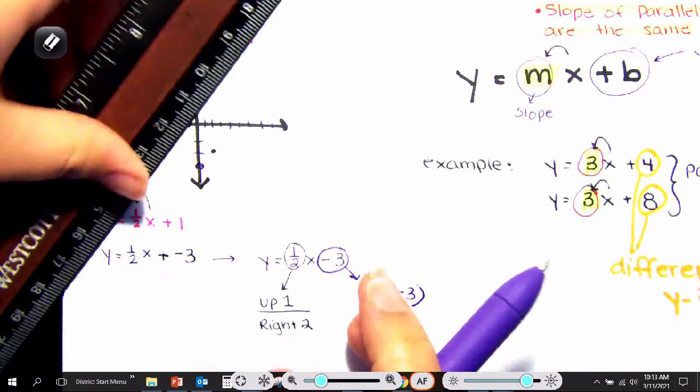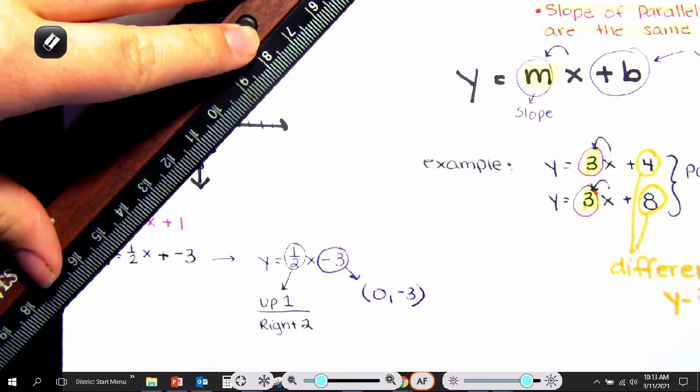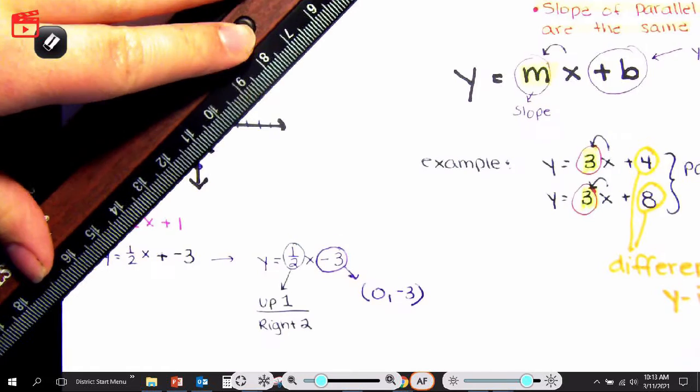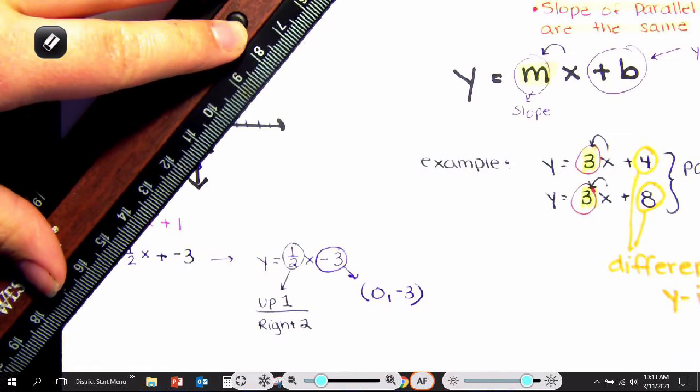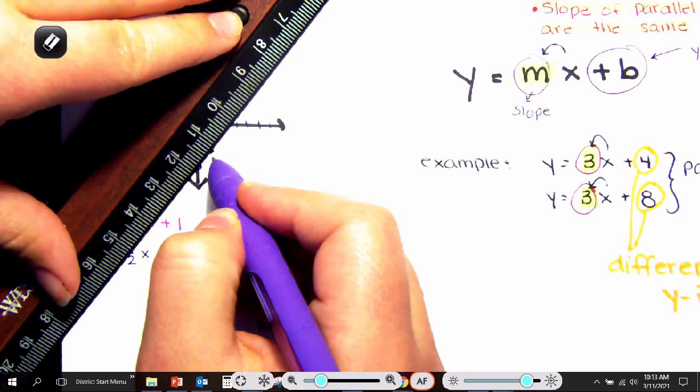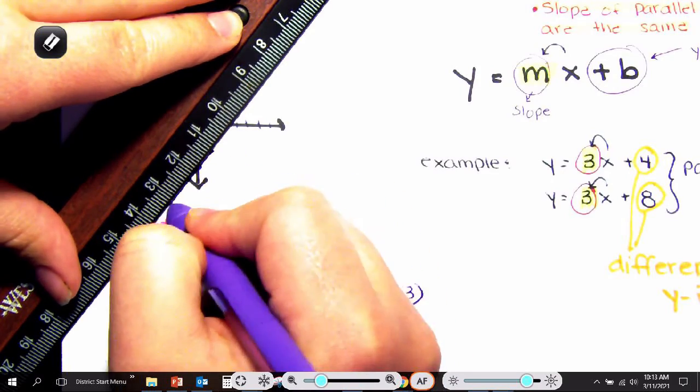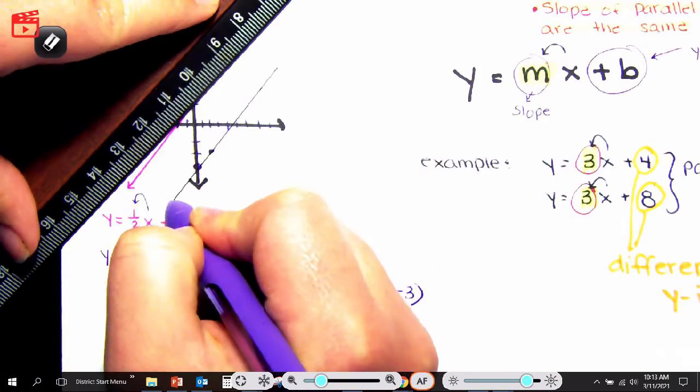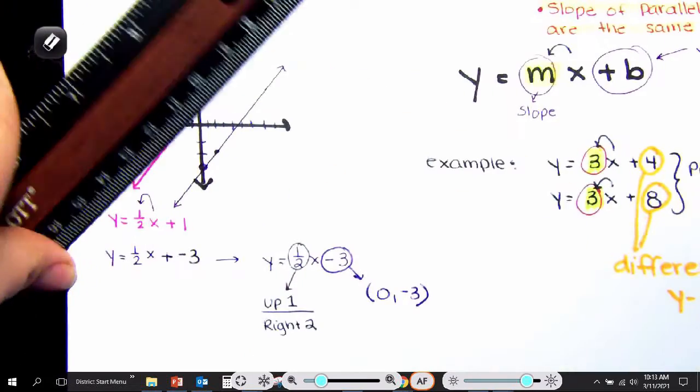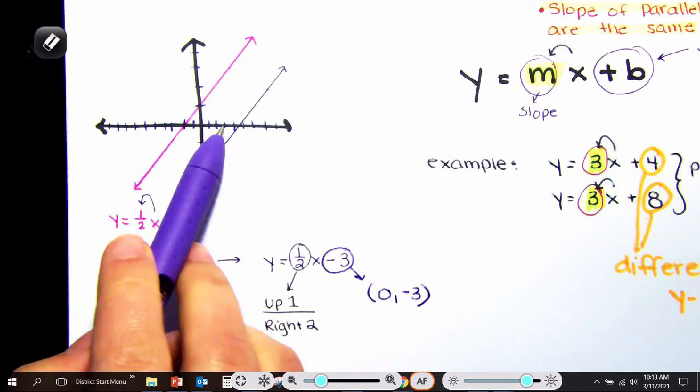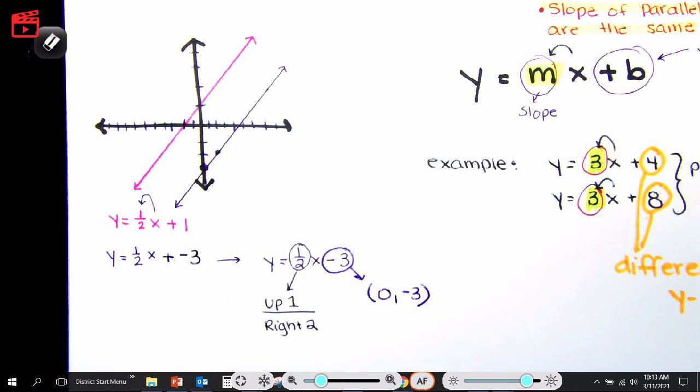And then let's connect it using a ruler or a straight edge. If you don't have a ruler, just simply use a sheet of paper that you can fold to make it a little bit of a thicker edge. And so when you draw the line, you're going to notice that these lines, because they have the same slope, they will not intersect.